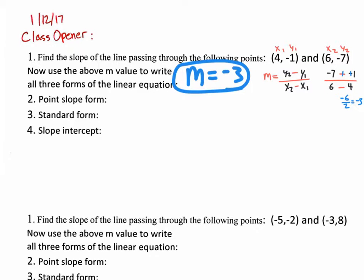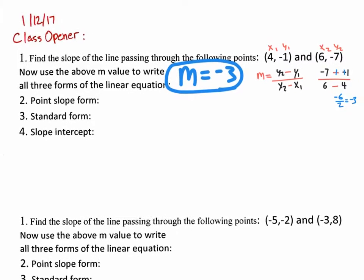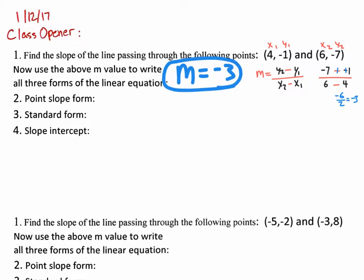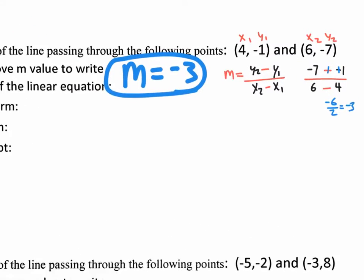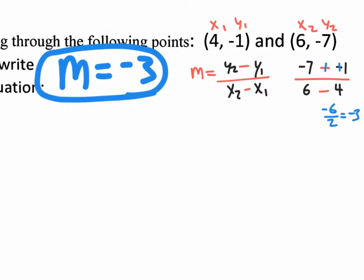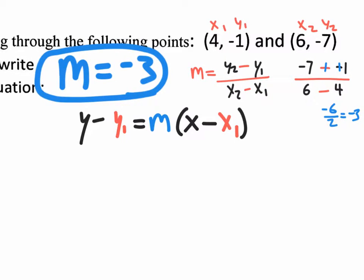The first thing to do is write down what point slope form is. Let me zoom in so we can get a better look. Point slope form is y minus y1 equals m times (x minus x1). I'm using color so you can see how easily the values get plugged in.